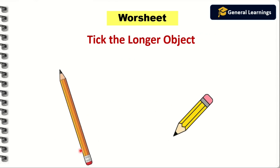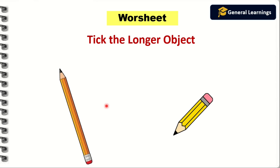Next we will see some worksheets. They tell us to tick the longer object. Longer means the length of the object should be more. Here they have given two pencil pictures, so we need to compare them and find which has more length. The left-hand side picture has more length, so that should be the longer one, and we are going to tick that object.